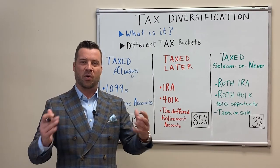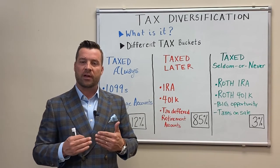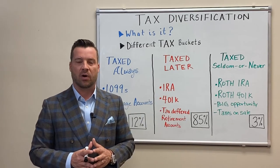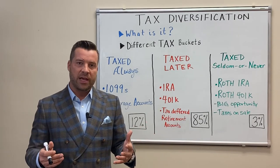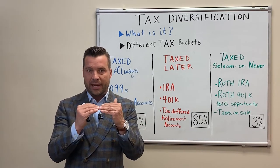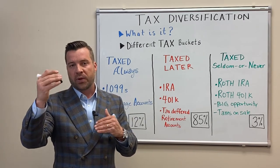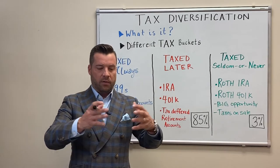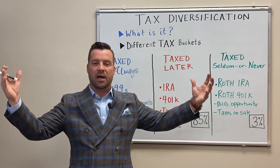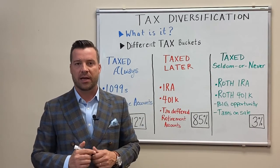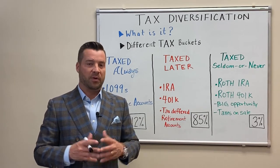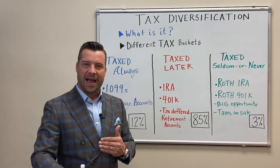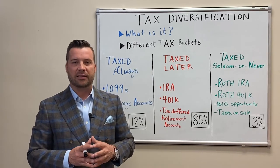I believe that over the next 10 to 20 years, taxes will likely go up over time for all of us in some form or fashion. So if you believe that taxes will either stay the same or potentially go up, would it make sense to pay taxes on money today and over 5, 10, 20, or 30 years, never pay tax on that money again — regardless of what it grows to? If you believe your investments are going to grow over time, we probably want to have more in that 'taxed never' bucket.